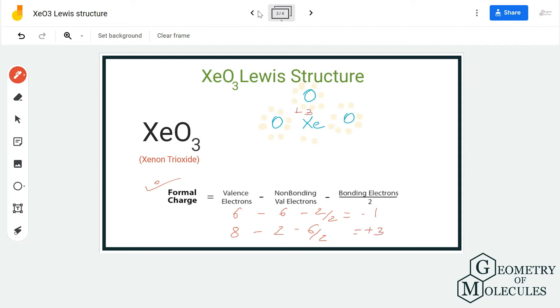Generally in Lewis structures, we tend to come up with a structure in which atoms have charges as near to zero as possible. So here what we are going to do is form three double bonds to balance out this plus three and make it zero.